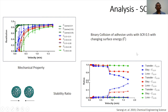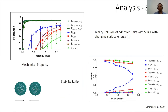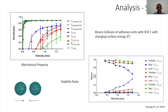For SCR 0.5, increasing surface energy causes particles to stick more, while decreasing it causes higher losses. For SCR 0.7 and 1.0, we see that increasing surface energy and surface coverage improves stability, but the initial velocity at which the shift starts moves significantly — meaning they tend to form larger agglomerates that may be harder to disperse later. The overall finding is that neither extreme is optimal; there is a stability window that can be identified from the graphs, detailed in the published paper.